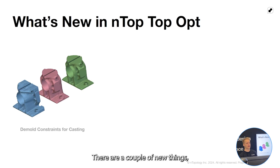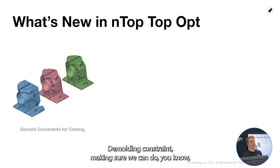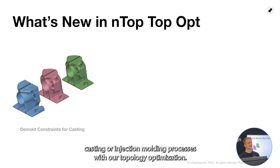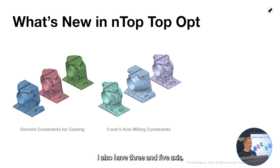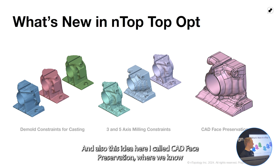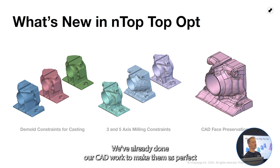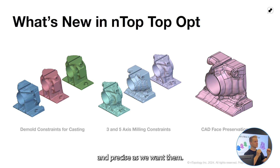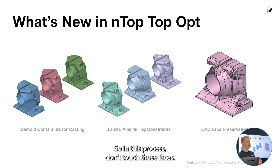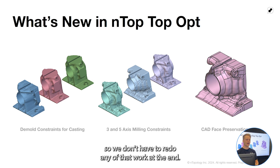What's new? There are a couple of new things. Demolding constraint — making sure we can do casting or injection molding processes with our topology optimization. We also have three and five-axis milling constraints. And also CAD face preservation: where we know we have very specific mounting locations and we've already done our CAD work to make them precise, we can tell the process don't touch those faces, preserve them exactly as they are so we don't have to redo any of that work at the end.